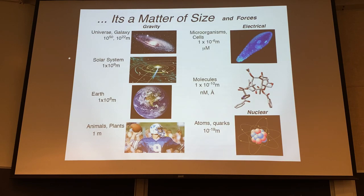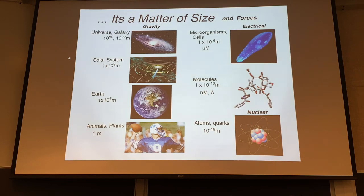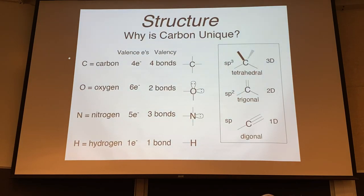These tiny molecules have profound effects on cells, which are much larger, and cells impact animals and plants at an even larger scale. Physicists deal with galaxies and solar systems on the large end, and subatomic particles - quarks, muons, bosons - on the small end. We deal with electrons, neutrons, and protons making up atoms, and atoms combining to make molecules.